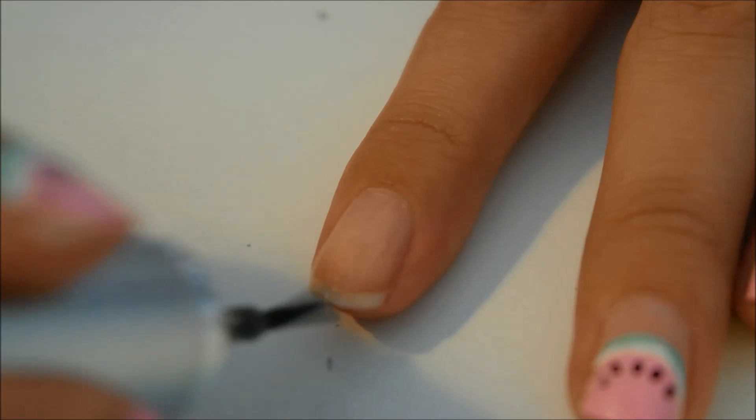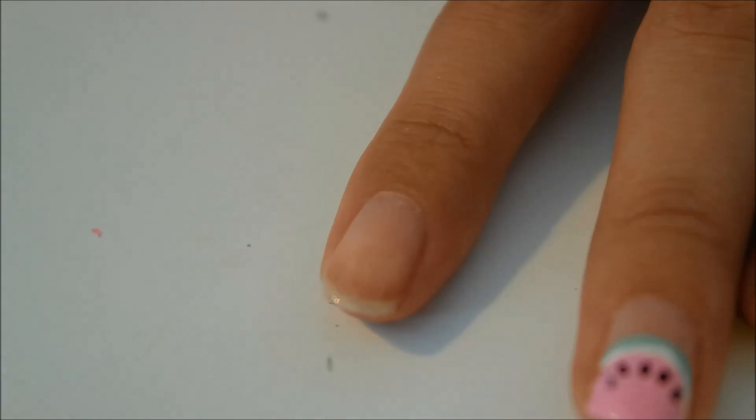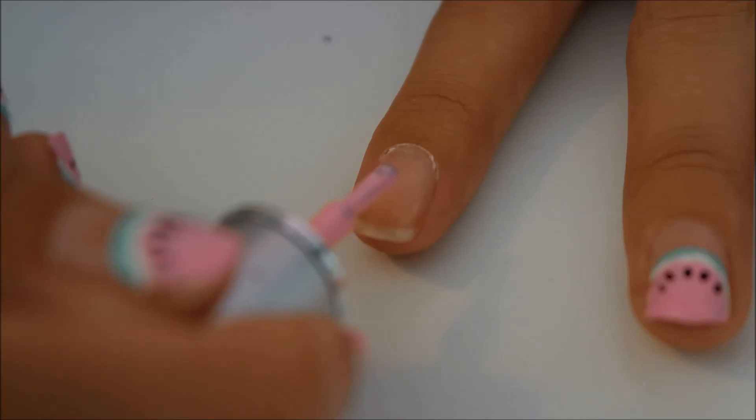First I'm applying a base coat and then I'm gonna take my light pink color and make a little circle at the tip of my nail like this.